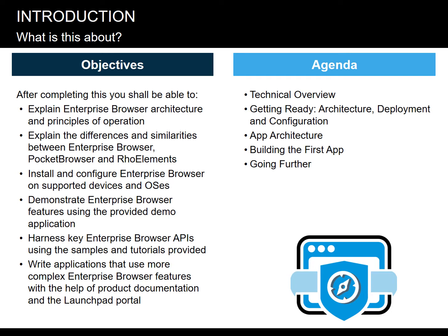We will start by taking a closer look at the enterprise browser architecture and principles of operation. Then check out the demo application that will help us understand how it really works. The course continues as a series of tutorials that will introduce you to the key features, APIs, and guiding principles of EB development. By the end of the course, you will know enough to write simple apps yourself and more complex apps with the help of product manuals and your colleagues from our Launchpad portal.